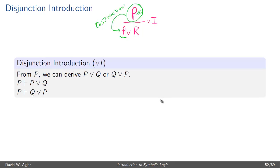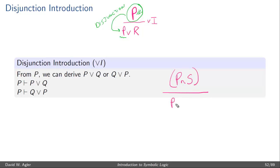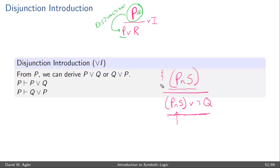Since P and Q are just placeholders or variables for any formula in the language of propositional logic, we can use disjunction introduction to reason to more complicated formulas. For example, if you had a formula like P and S, you could use disjunction introduction to reason to (P and S) or not Q. Here again we're reasoning from a formula to a disjunction, and one of the disjuncts of the resulting disjunction is the formula we started with.